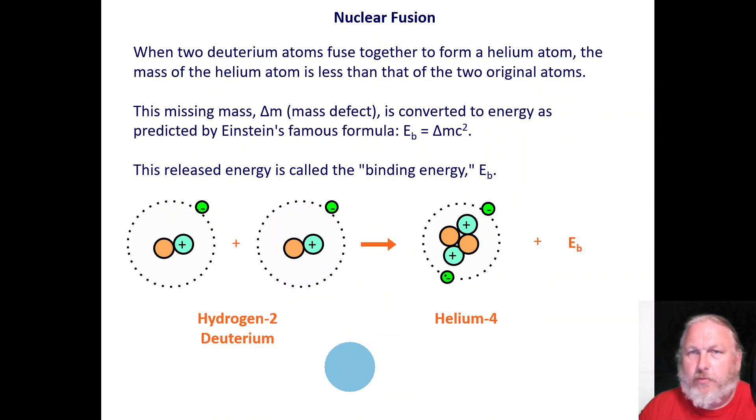When these two deuterium atoms would fuse together to form the helium, the mass of the helium atom is less than that of the two original atoms. So there's a missing mass, and we call that delta M or the change in mass, or the mass defect. Now, Einstein, this is where he became sort of famous. He hypothesized that this mass, this missing mass, is converted to energy. And this is where he comes with the E equals mc squared. But that EB, or the binding energy, is equal to the change of mass, the mass defect, times the square of the speed of light. Now, we call this EB, the binding energy,